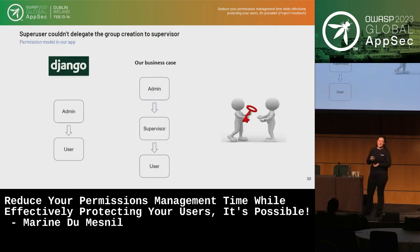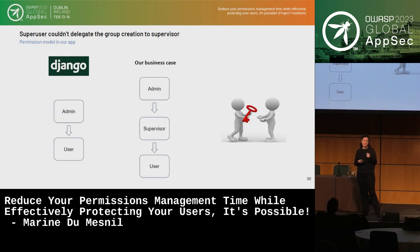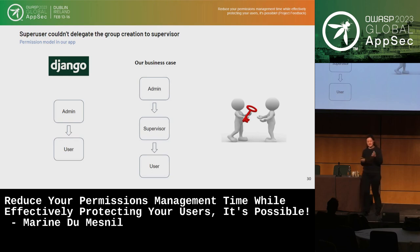One of the issues was that in Django, the admin couldn't delegate group creation to supervisors. In our supervisor team, those people knew if someone was joining or leaving, and who should have access to which resources — but our admin didn't know that. So we had to change this model.